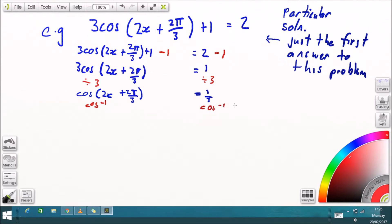That leaves us, inverse cos both sides, that leaves us with 2x plus 2 pi over 3 equals the inverse cos of 1 over 3. Now you probably don't know this off the top of your head, but luckily your calculator does, and it's 1.2310 rounded.